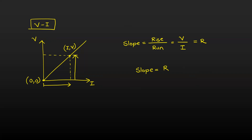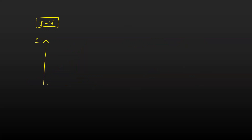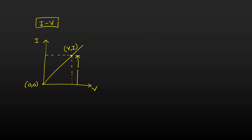Now let's look at the current versus voltage graph. On the y-axis we have current, and on the x-axis we have voltage. Again there is a linear graph, which means it follows Ohm's law. I choose one point on this graph — the x-coordinate is voltage and the y-coordinate is current. The graph passes through the origin (0, 0). I draw lines parallel to the y-axis and parallel to the x-axis. The rise here is the current and the run is the voltage.